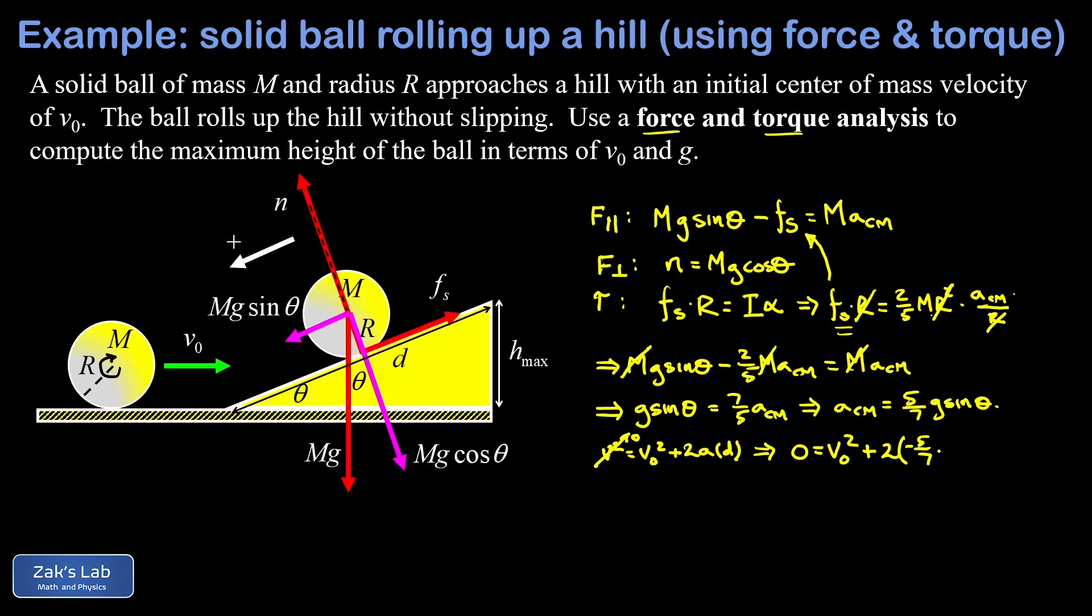And so I can add that term with the minus sign to both sides and I'm going to simplify it to 10/7 g sinθ and that's multiplied by d. And that's going to be equal to v₀².